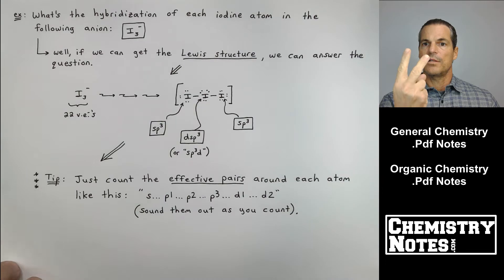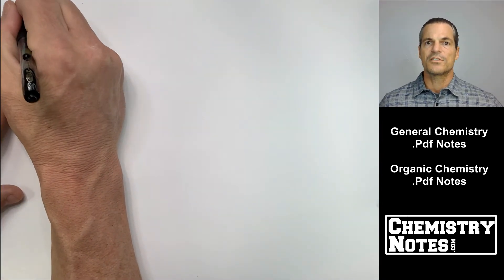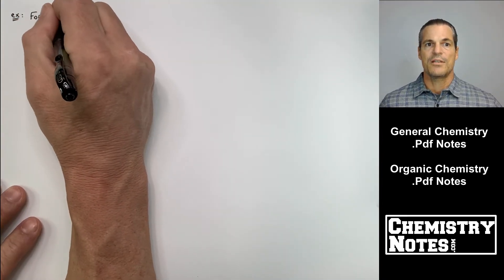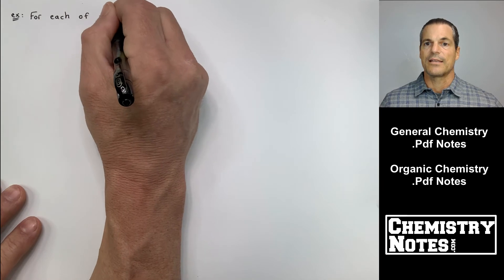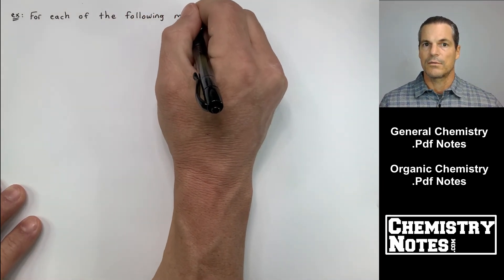Iodine in the middle has three lone pairs and then two bonds. That's five effective pairs. See my hand here? I'm going to go around. S, P1, P2, P3, D. So it's S, P3, D or as we call it, D, S, P3. So if you're just told to identify the hybridization, you simply have to remember that saying S, P1, P2, P3, D1, D2.